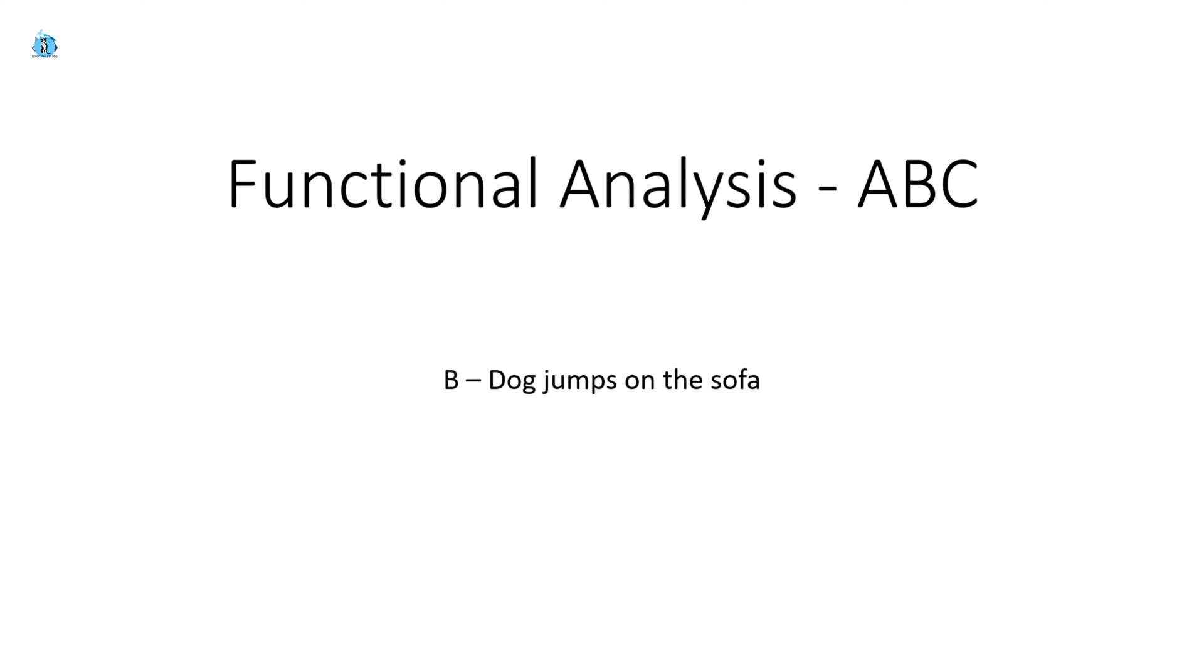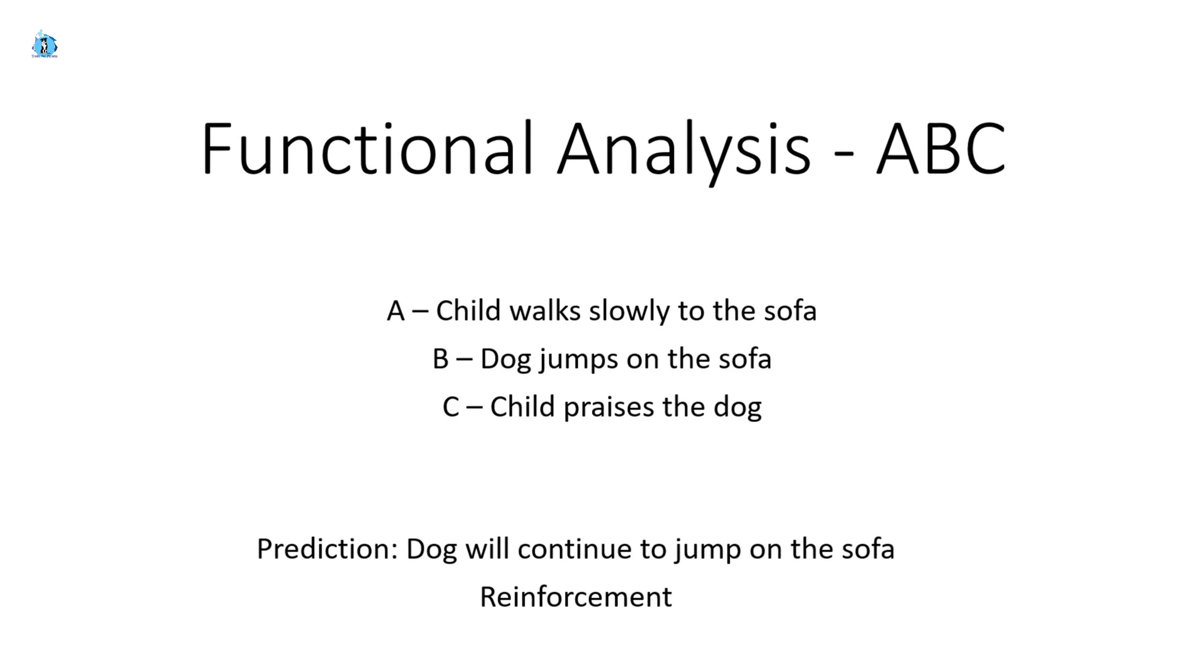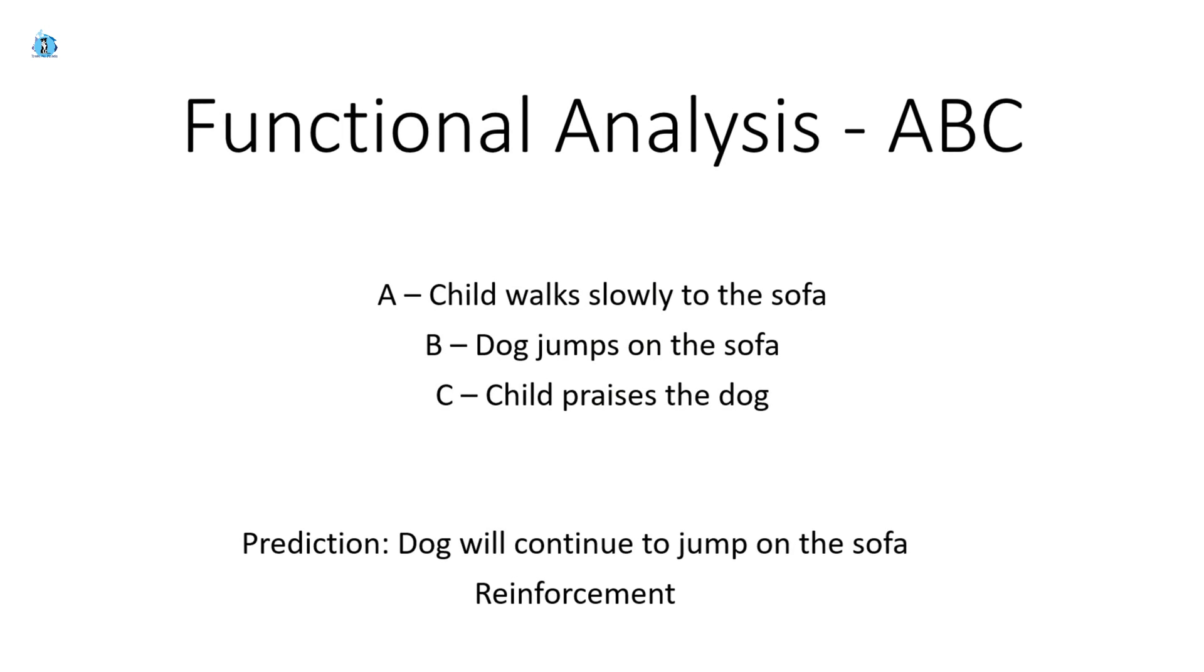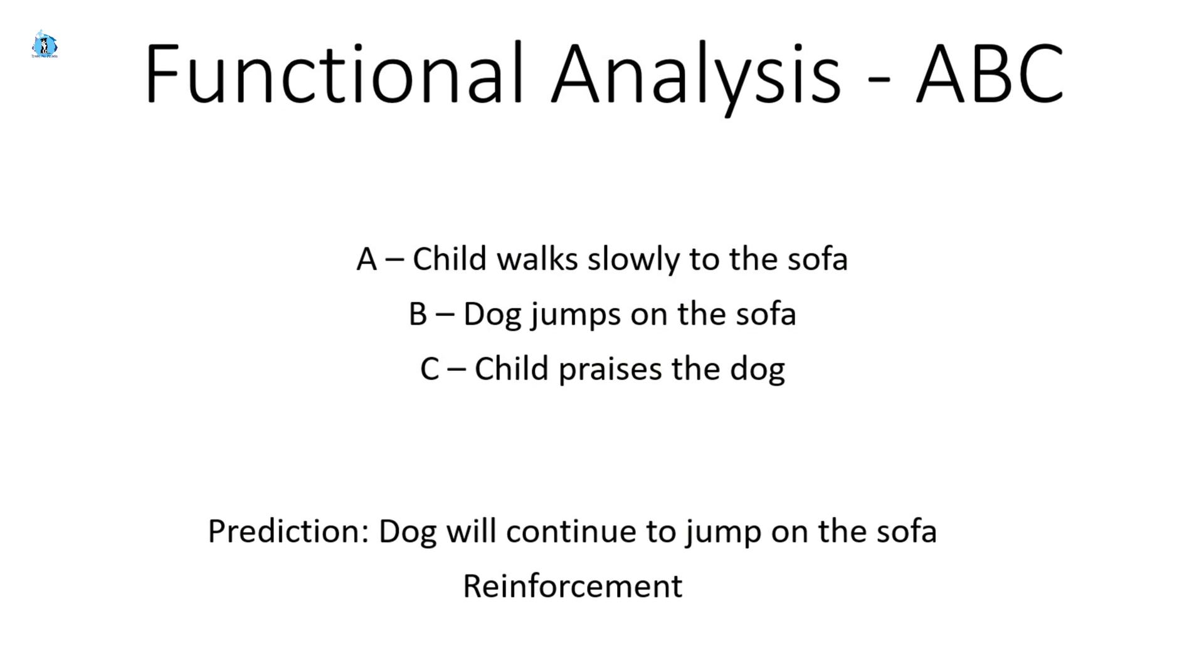Time for another functional analysis. Starting with the behavior, the dog jumps on the sofa. The antecedent is that the child walks slowly to the sofa. The consequence is that the child praises the dog. Once again, we could possibly predict that given the same environmental circumstances, the dog will continue to jump on the sofa to join the child.